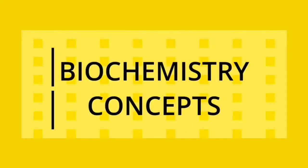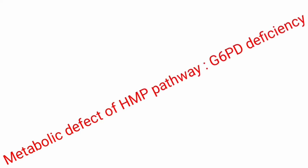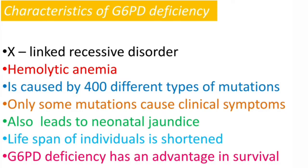Welcome to Biochemistry Concepts. This video is about the most important metabolic defect in the HMP pathway, which is the deficiency of glucose-6-phosphate dehydrogenase. Normally, this enzyme converts glucose-6-phosphate into 6-phosphogluconolactone with the generation of one molecule of NADPH.